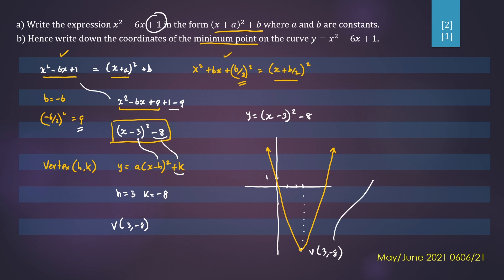So we can see from the graph that the minimum point is going to be 3, negative 8. And that's the answer for part B. Thanks for watching. See you later.